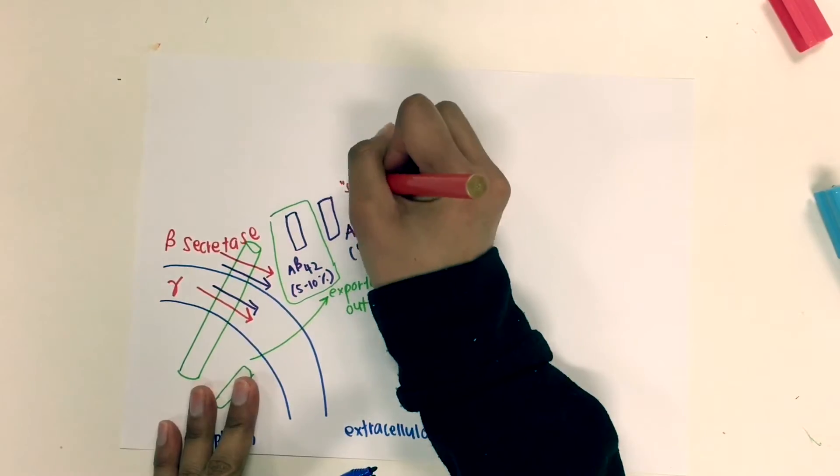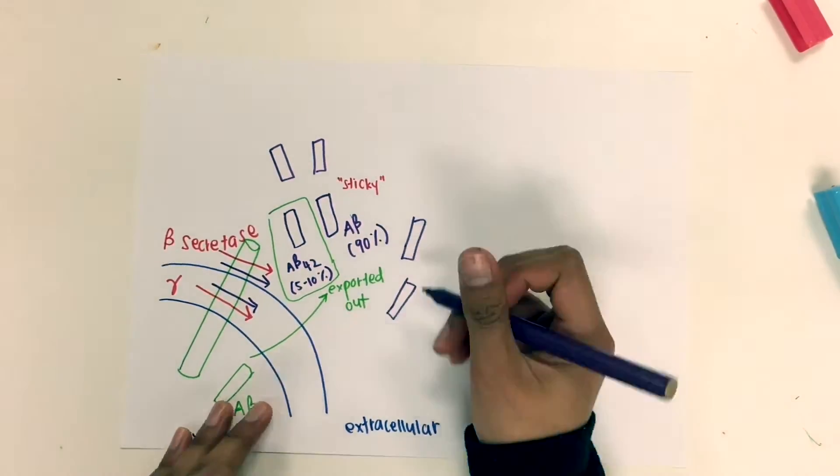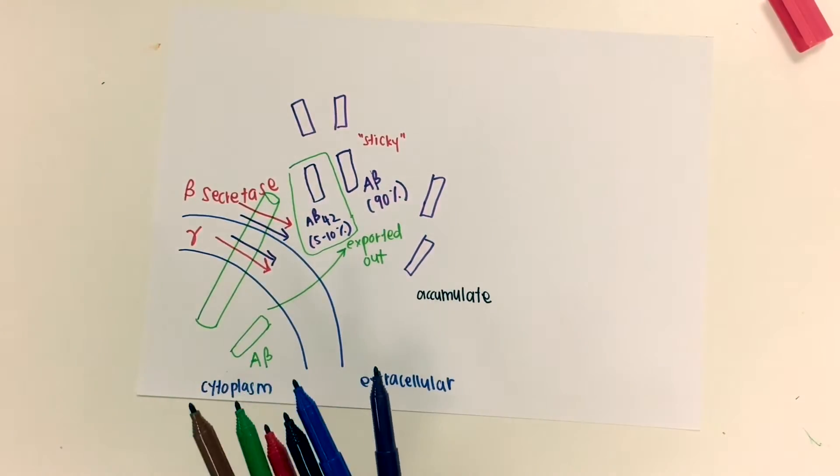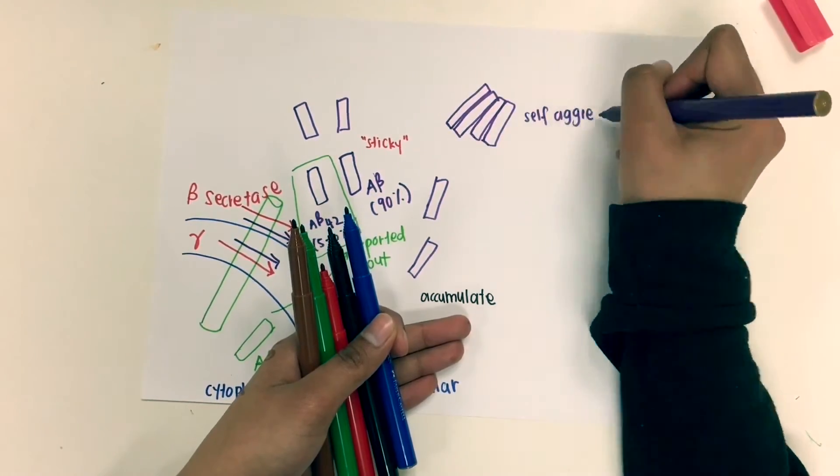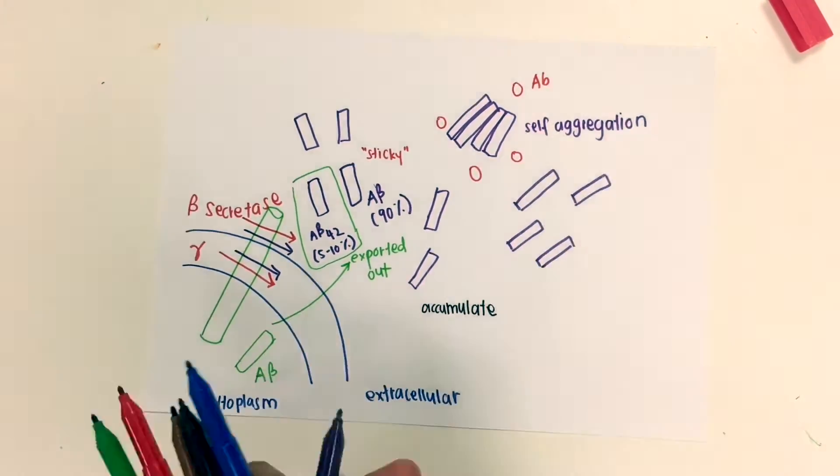The peptides are sticky, chemically sticky, and they are accumulated outside the cell, and they will self-aggregate to form oligomers. The oligomers can be cleared up by antibody by binding of the antibody to the monomers, the peptides, to prevent the aggregation.